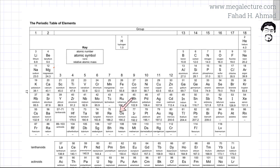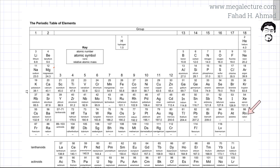As you move across the period, the first ionization energy increases, because you have more protons and there's more attraction for electrons. But as soon as you leave that period and move to the next period, there's a drastic decrease in ionization energy, because the element now has one more shell, so the electron is further away from the nucleus, making it very easy to remove.